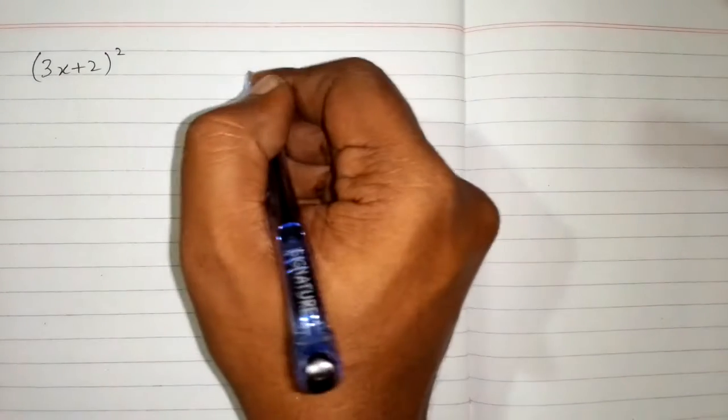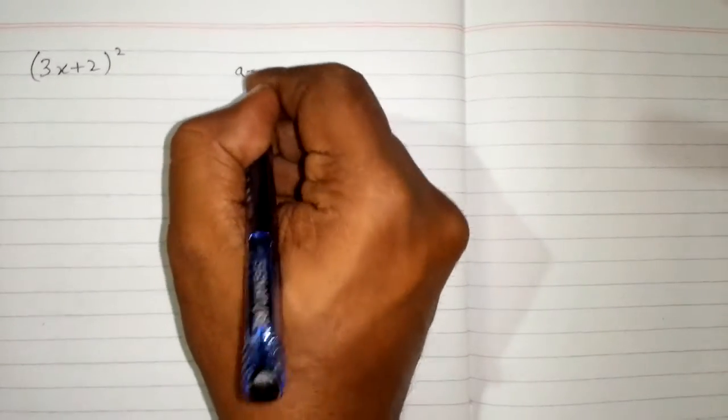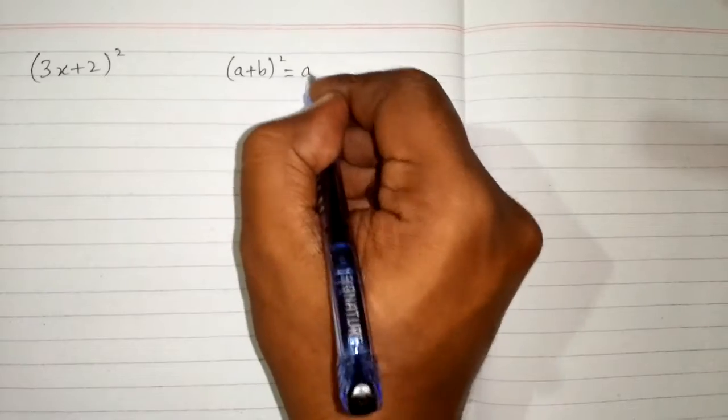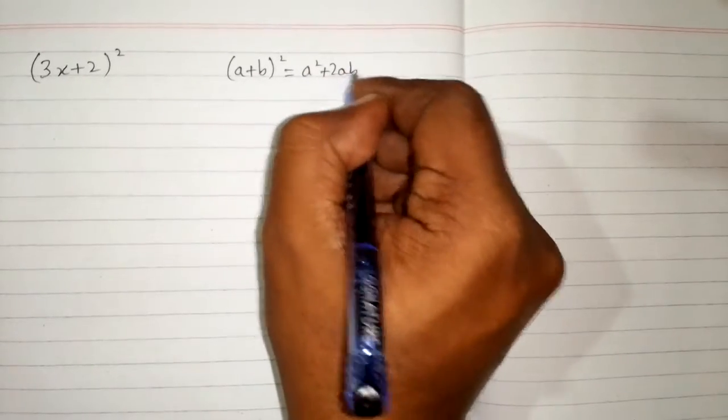In this video we will find the square of 3x plus 2. So we will use the formula a plus b whole square is equal to a square plus 2ab plus b square.